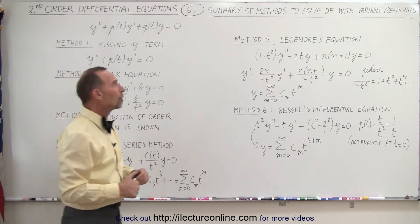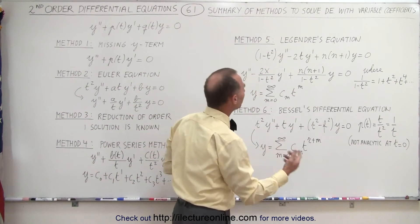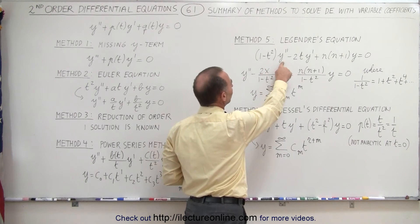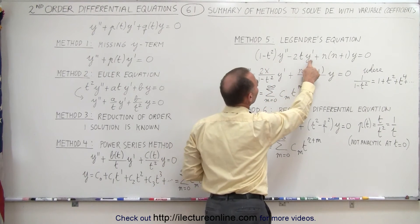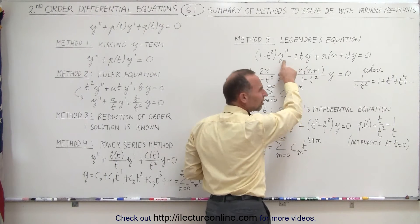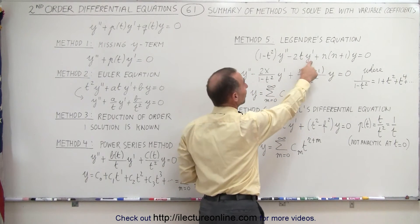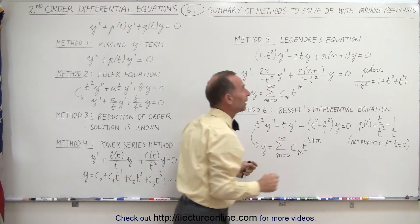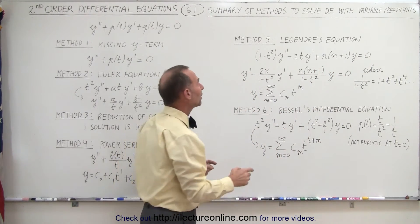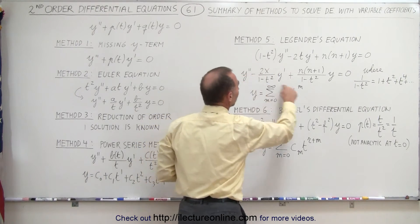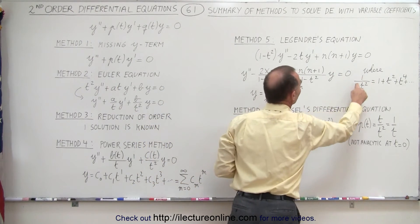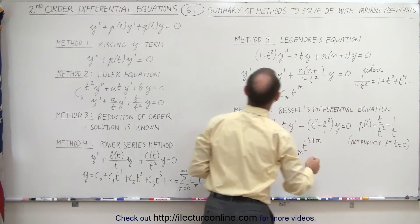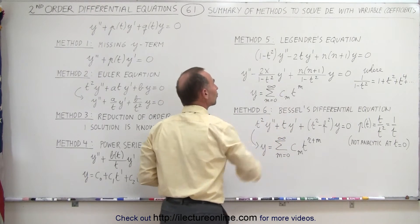The fifth method is what we call Legendre's equation. Now that looks a little bit different. Here we have the general format of 1 minus t squared times y double prime minus 2t times y prime plus n times n plus 1 times y equals 0. If you find something in that format, we could then write into the standard format like this, and realizing that 1 over 1 minus t squared can be expressed in an infinite sum like this, we could then also find the solution using an infinite sum.